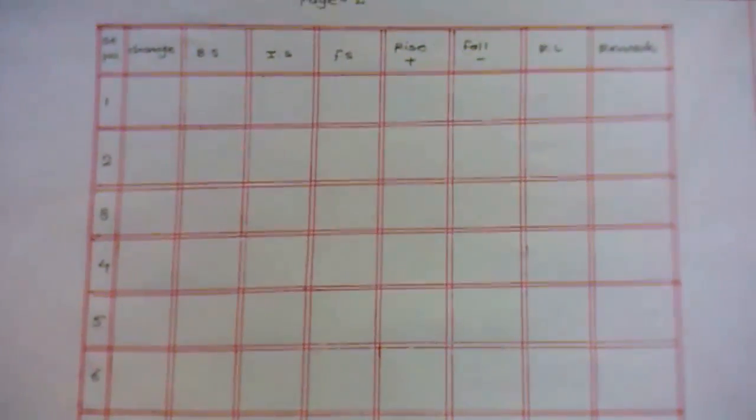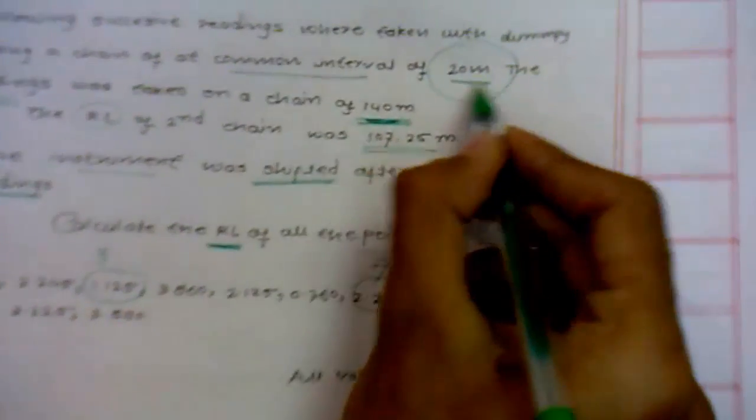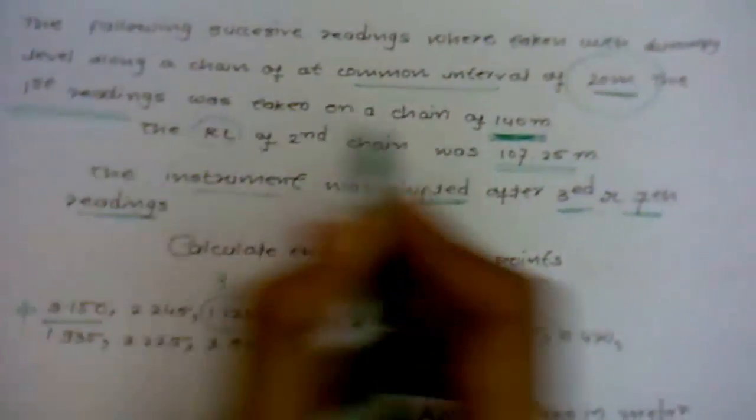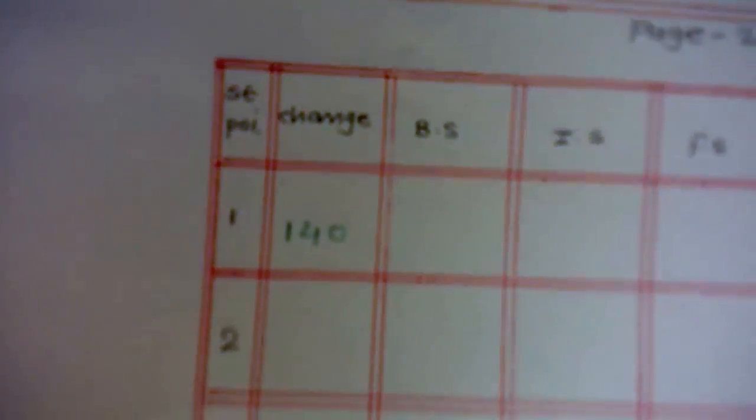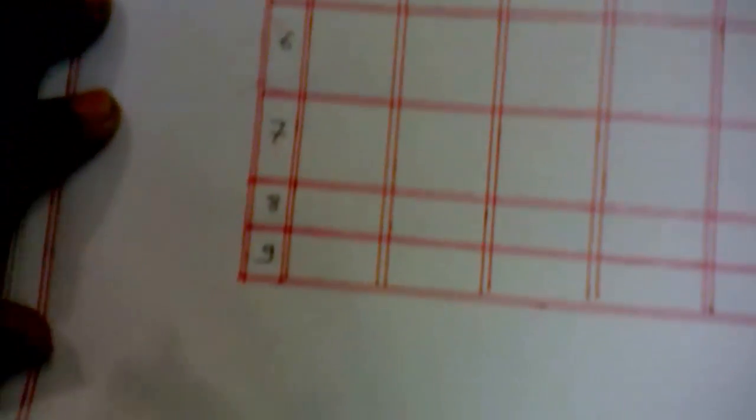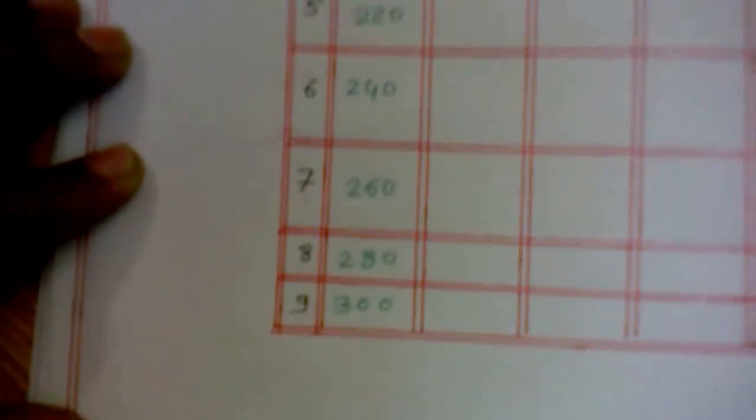Here, as we know that the chain is at the common interval of 20 and 140, the first reading was taken at the chain of 140 meters, so we put this value in the chain column. 140. Now with 20, 20 distance, we are putting all this value up to the 9th level. At second point the value is 160, after 180, then 200, then 220, then 240, then 260, then 280, and then 300.